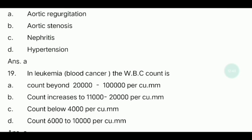Nineteenth question: In leukemia — leukemia is blood cancer — the WBC count options are: count beyond 20,000 per cubic millimeter; count increases to 11,000 to 20,000 per cubic millimeter; count below 4,000 per cubic millimeter; count 6,000 to 10,000 per cubic millimeter. The answer is count beyond 20,000 per cubic millimeter.